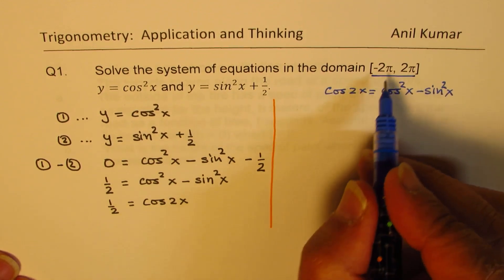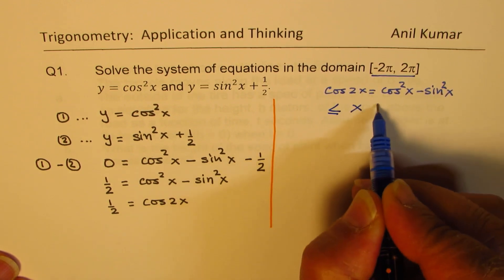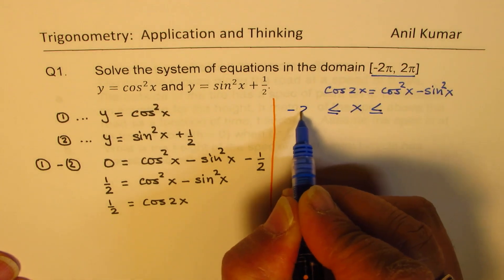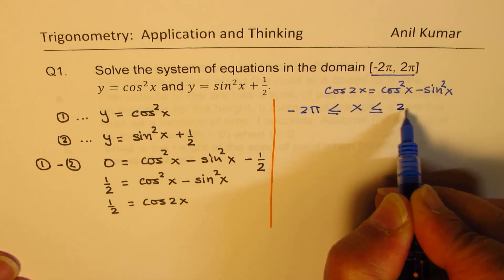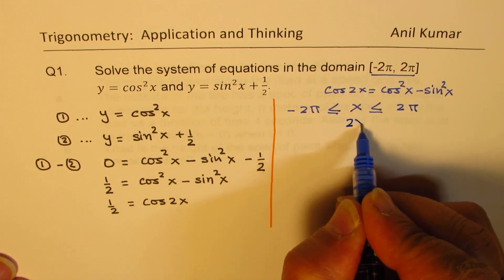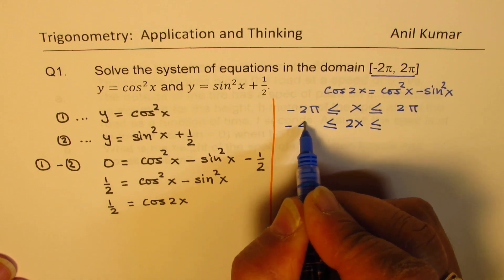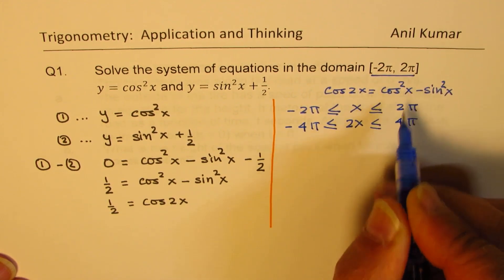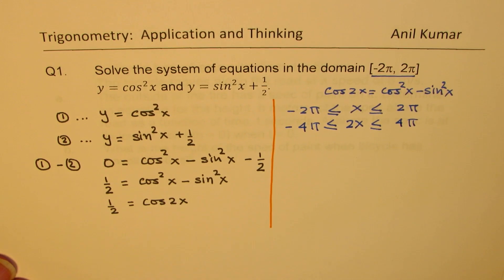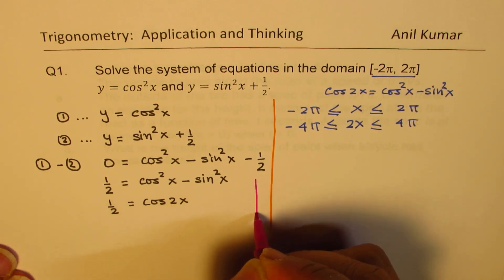Now we'll work on the domain itself. As far as the domain is concerned, we are saying that x is between minus 2π and plus 2π. But in the equation we have 2x, so we need to multiply this by 2 in all three terms. We get minus 4π to plus 4π, so that becomes now the domain for 2x. Now cos 2x is equal to half, so what is the value of 2x? Well, let's use our special triangle.